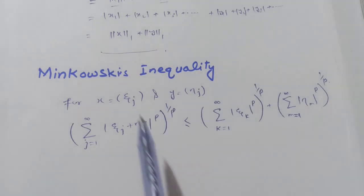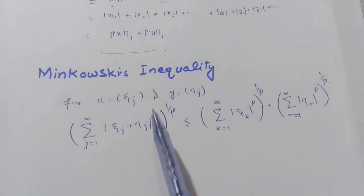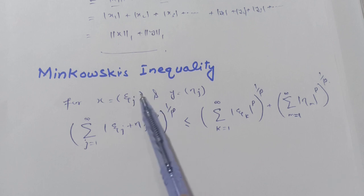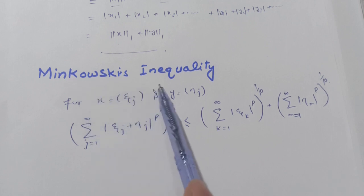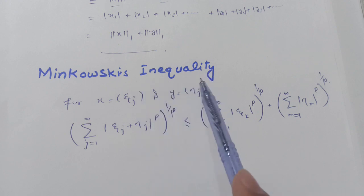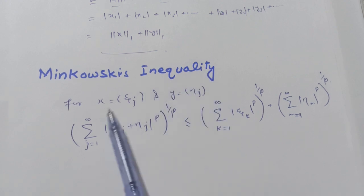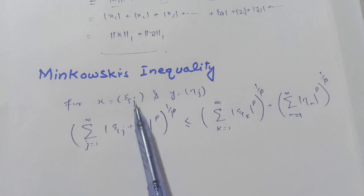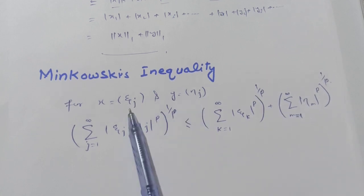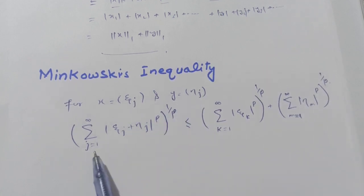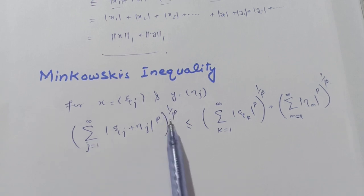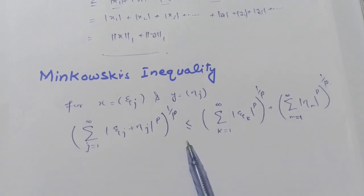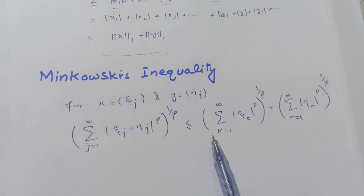Before the lp example, we discuss one important definition: Minkowski's inequality. If x = (ξⱼ) and y = (ηⱼ), then (Σ|ξⱼ + ηⱼ|ᵖ)^(1/p) ≤ (Σ|ξⱼ|ᵖ)^(1/p) + (Σ|ηⱼ|ᵖ)^(1/p). This is the well-known Minkowski's inequality.